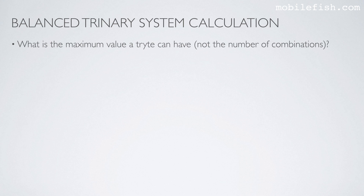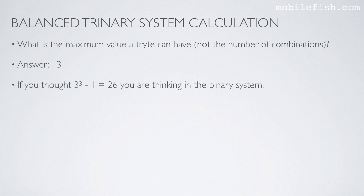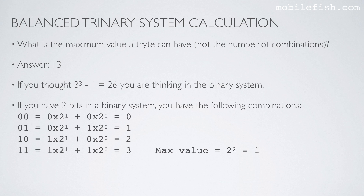What is the maximum value a tryte can have? I am not interested in the number of combinations. The answer is 13. If you thought the number was 26, you are thinking in a binary system. If you have 2 bits in a binary system, you have the following combinations: 00, 01, 10, 11. And these are its values. If you have 2 bits, the maximum value is 3.